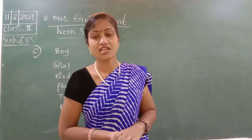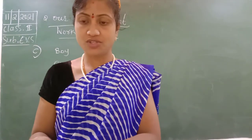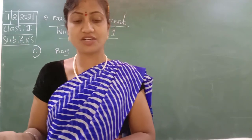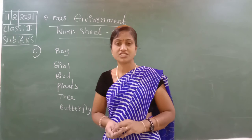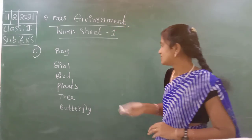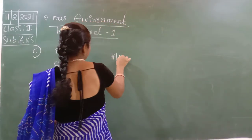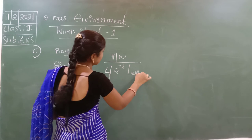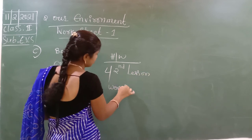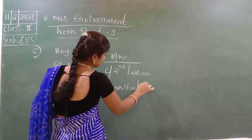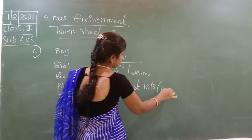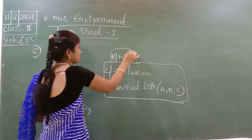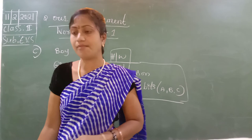This is about the worksheet. So tomorrow we will start a new lesson — plants, our friends. Children, just you have to learn the ABC bits for homework — learn ABC and everything about anchor, system and building.